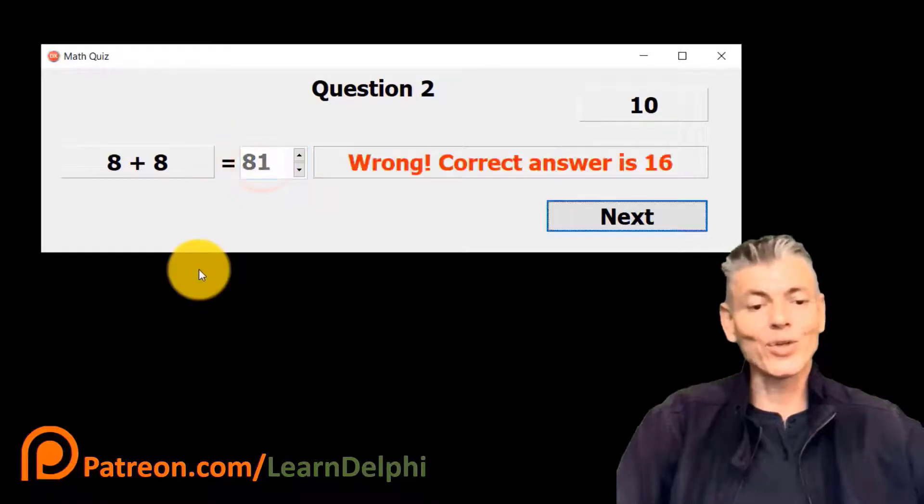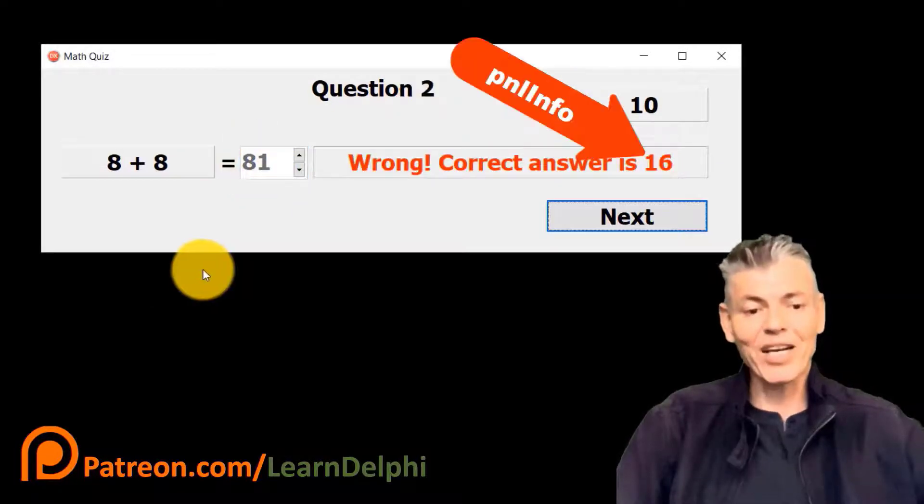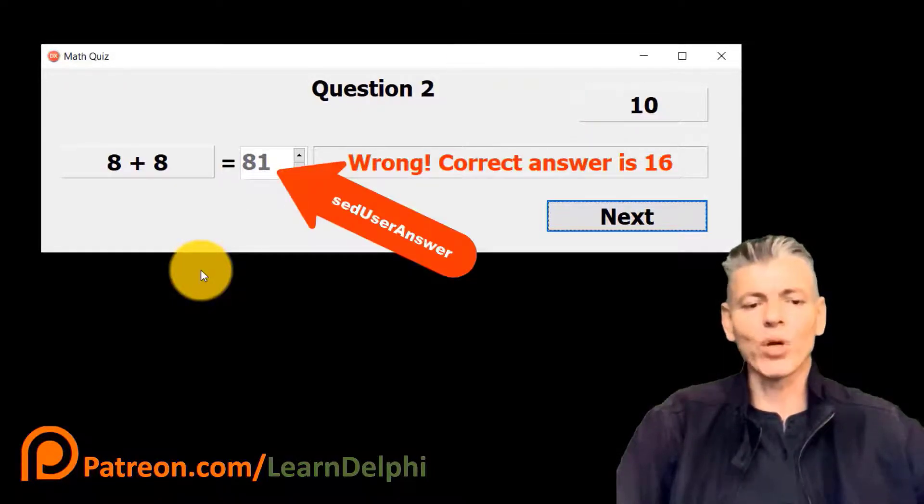If your answer is incorrect, the score must stay the same. This panel must then tell you what the correct answer is. The user can't cheat after seeing the correct answer because the spin edit will always be disabled after answering the math question.